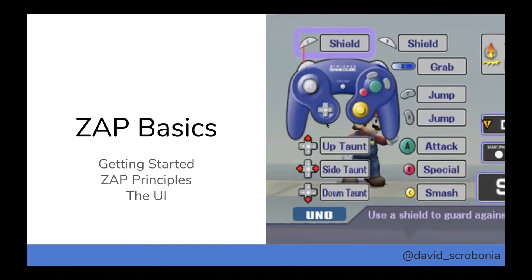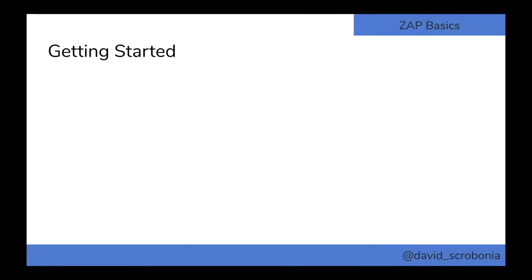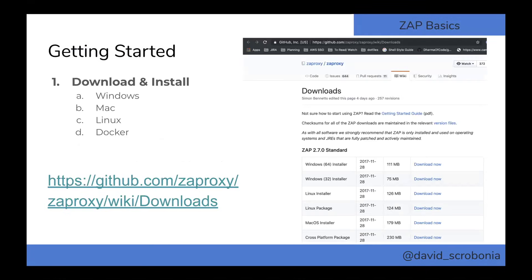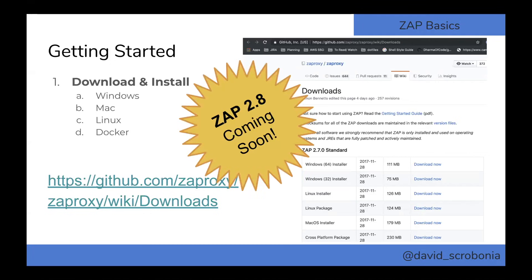Now let's dive into some ZAP basics: how to get started, key principles to keep in mind, and a quick overview of the UI. To download and install ZAP, go to this link — there are installers for Windows, Mac, and Linux, a cross-platform Java version, and even a Docker image. ZAP 2.8, which includes all features built over the last year and a half, is scheduled to come out next week. All the screenshots here are from ZAP 2.8.